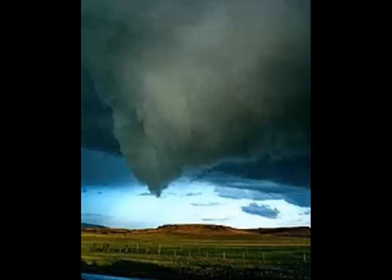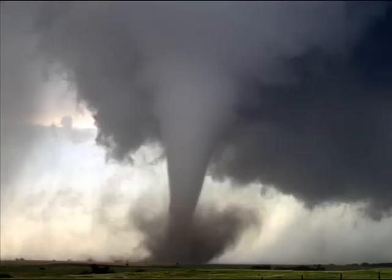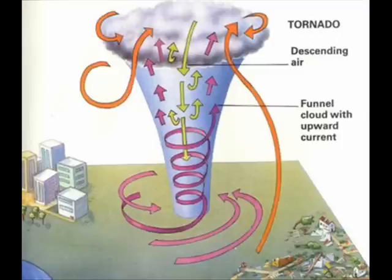The wise see trouble coming and take steps to avoid it. Well, Charles, as the mesocyclone approaches the ground, a visible condensation funnel appears to descend from the base of the storm, often from a rotating wall cloud. As the funnel descends, the RFD also reaches the ground, creating a gust front that can cause damage a good distance from the tornado.